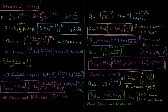For translations, the translational partition function is equal to V to the N over N factorial times (2π m kT over h²) to the 3N over 2, where V is the volume of the system, N is the number of particles, m is the mass of each particle, k is the Boltzmann constant, T the temperature, and h is Planck's constant.